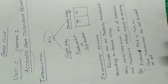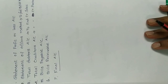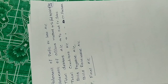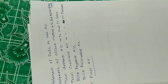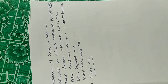So if you have to prepare the final account from incomplete records, there are 7 stages. The 1st is the statement of profit or loss, 2nd is the statement of affairs method, 3rd is total debtors account, 4th is total creditors account, 5th is bills payable account, 6th is bills receivable account, and the last one is the final account.